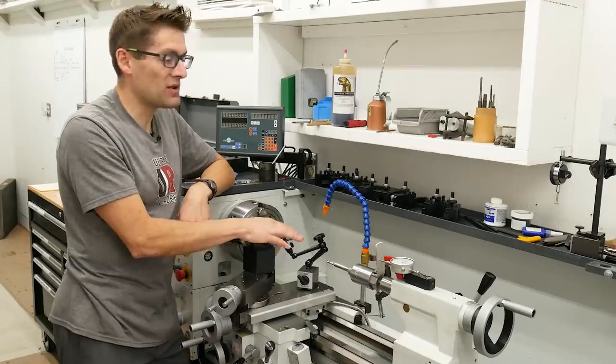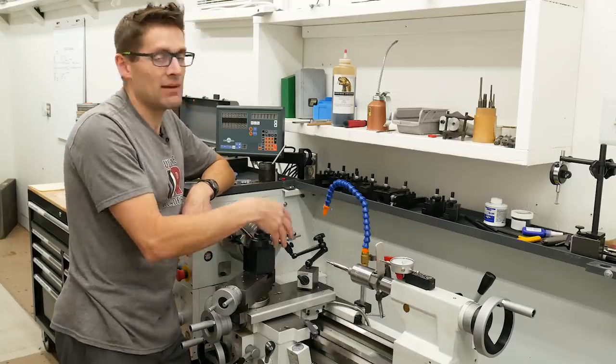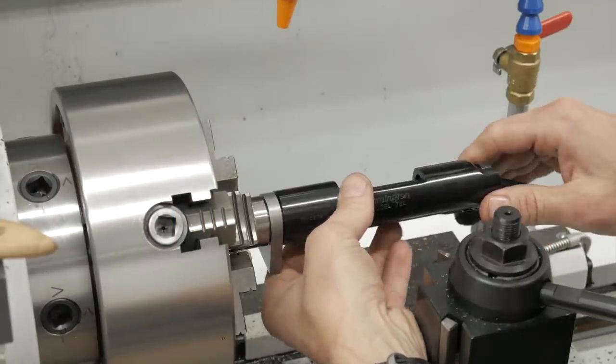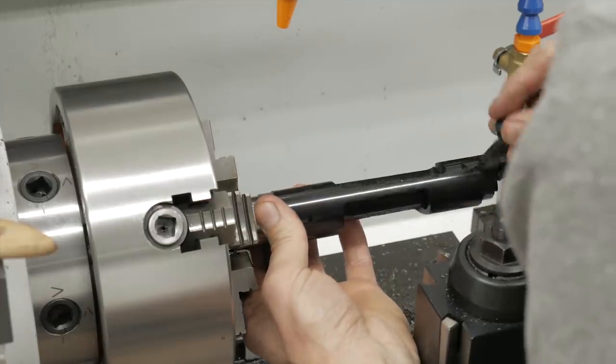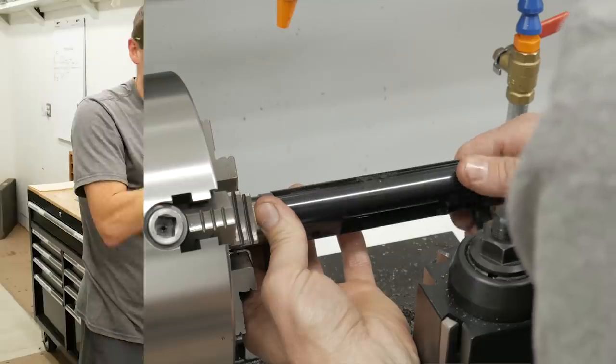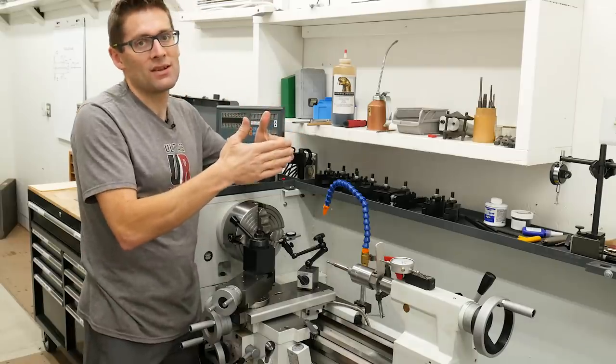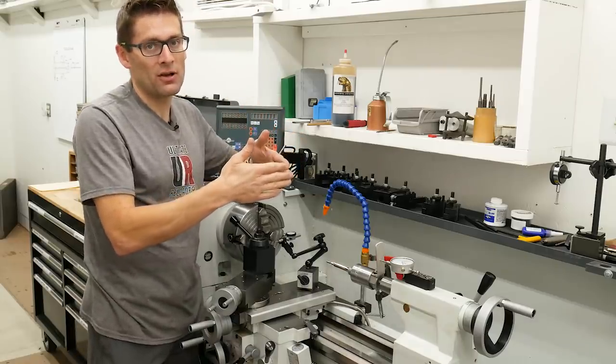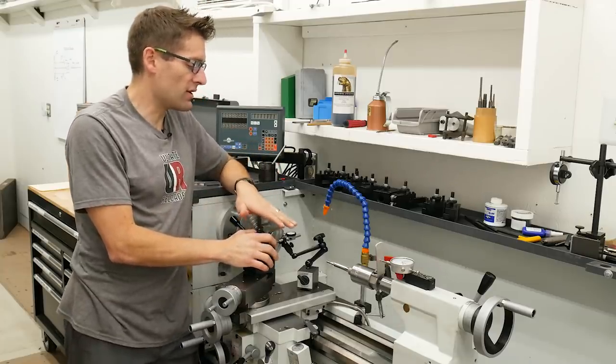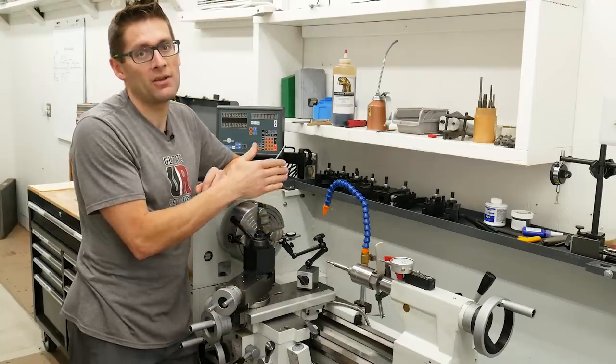And so when you get close to that point, when there's about ten or twenty thousandths left, then it's time to start screwing on the receiver with the recoil lug in place. With your go gauge in the bolt, close the bolt handle and then tighten the receiver until it sort of bottoms out. The go gauge is bottoming out against the shoulder of the chamber and that's testing for your headspace. And what will happen is if you're not cut deep enough, which we know we aren't yet, there will be a gap between the recoil lug and the receiver.